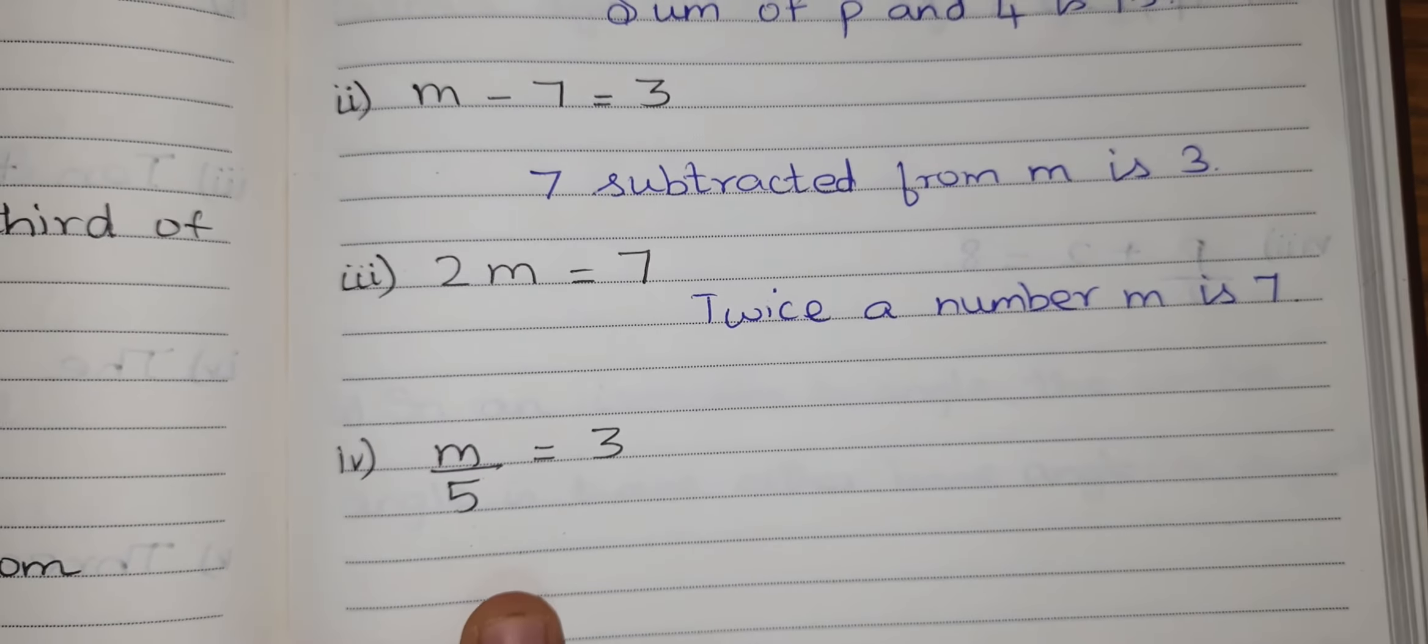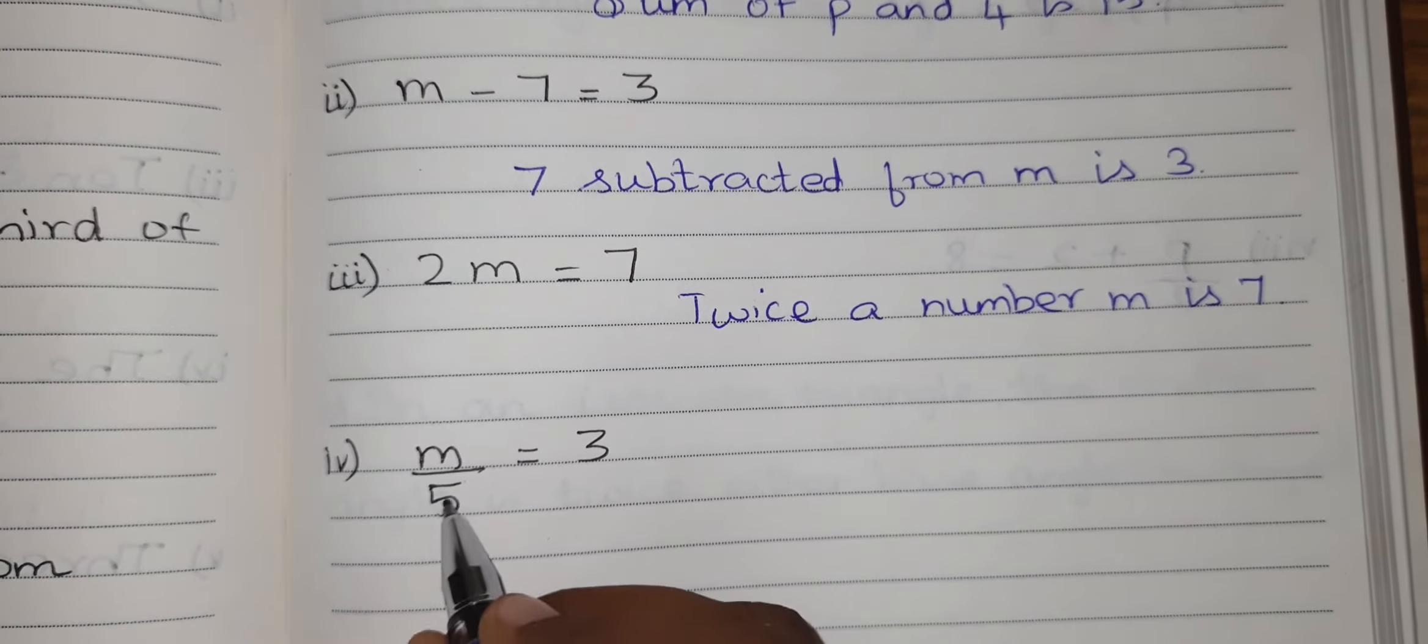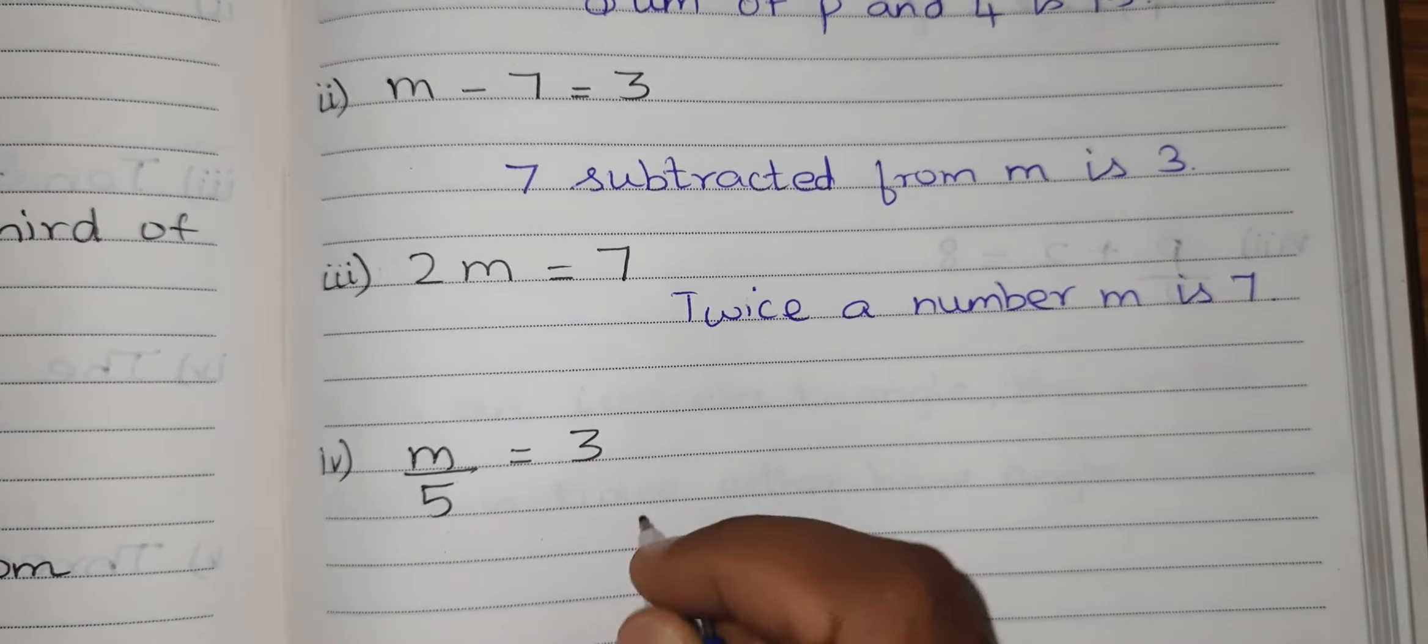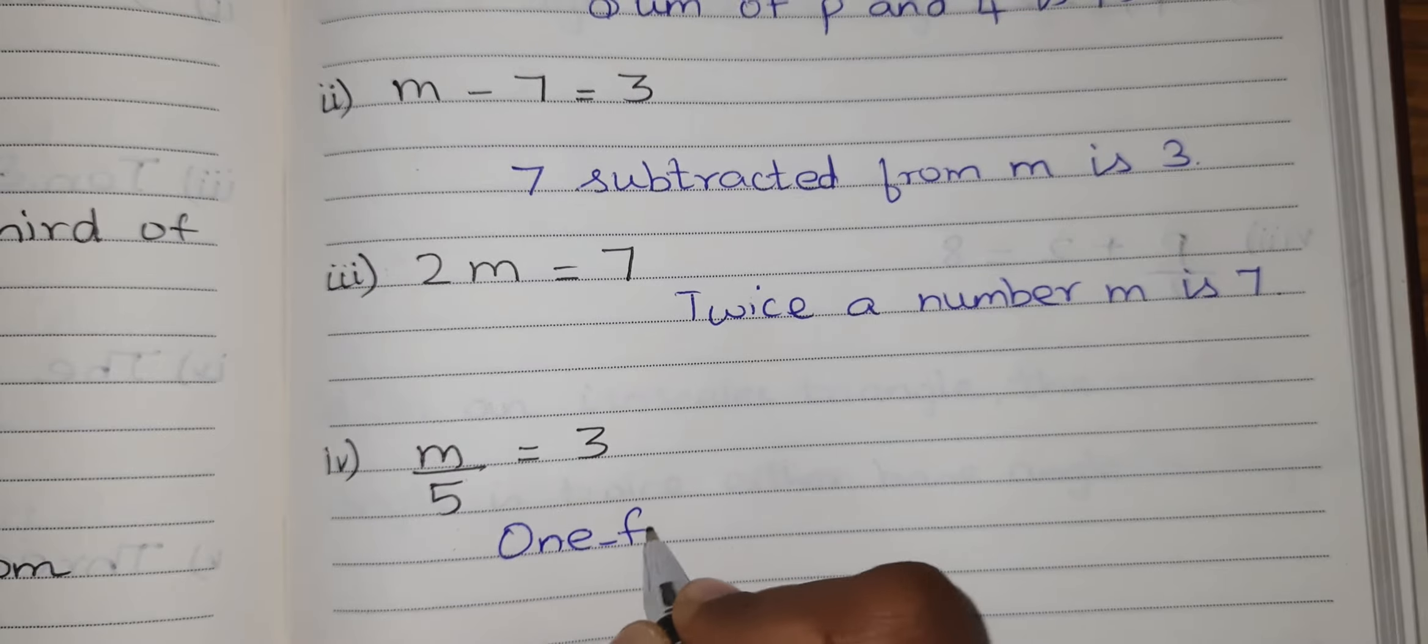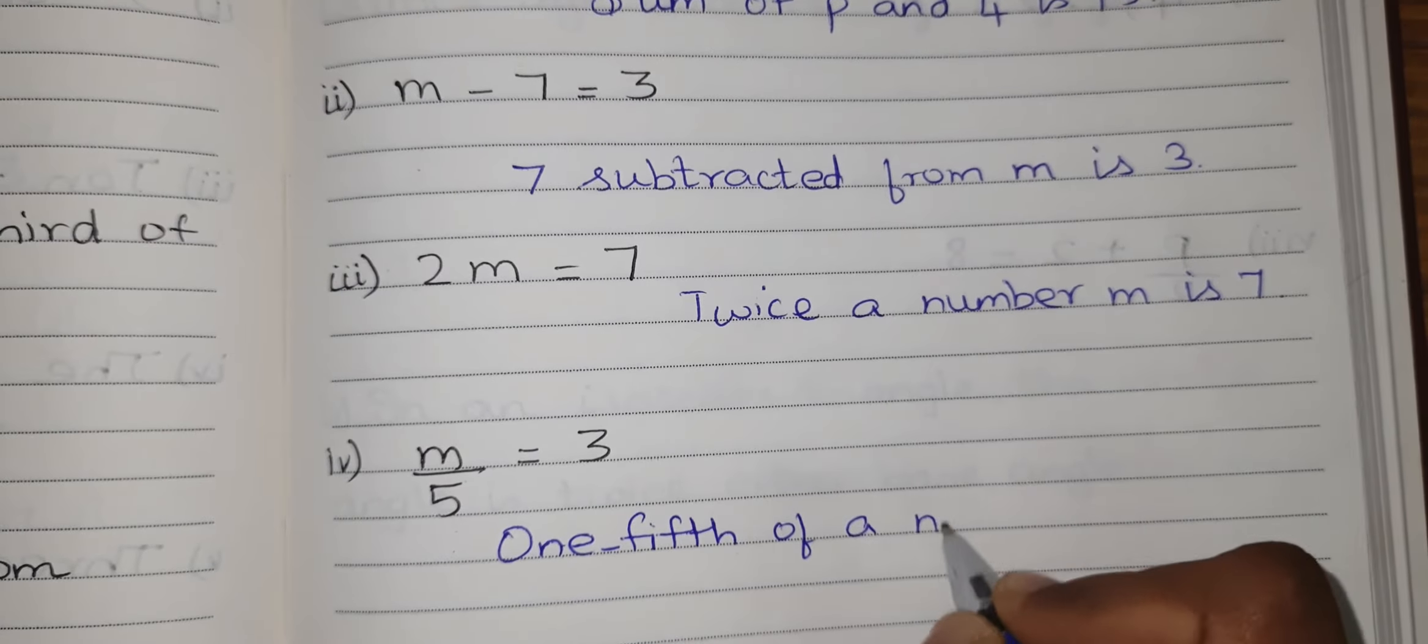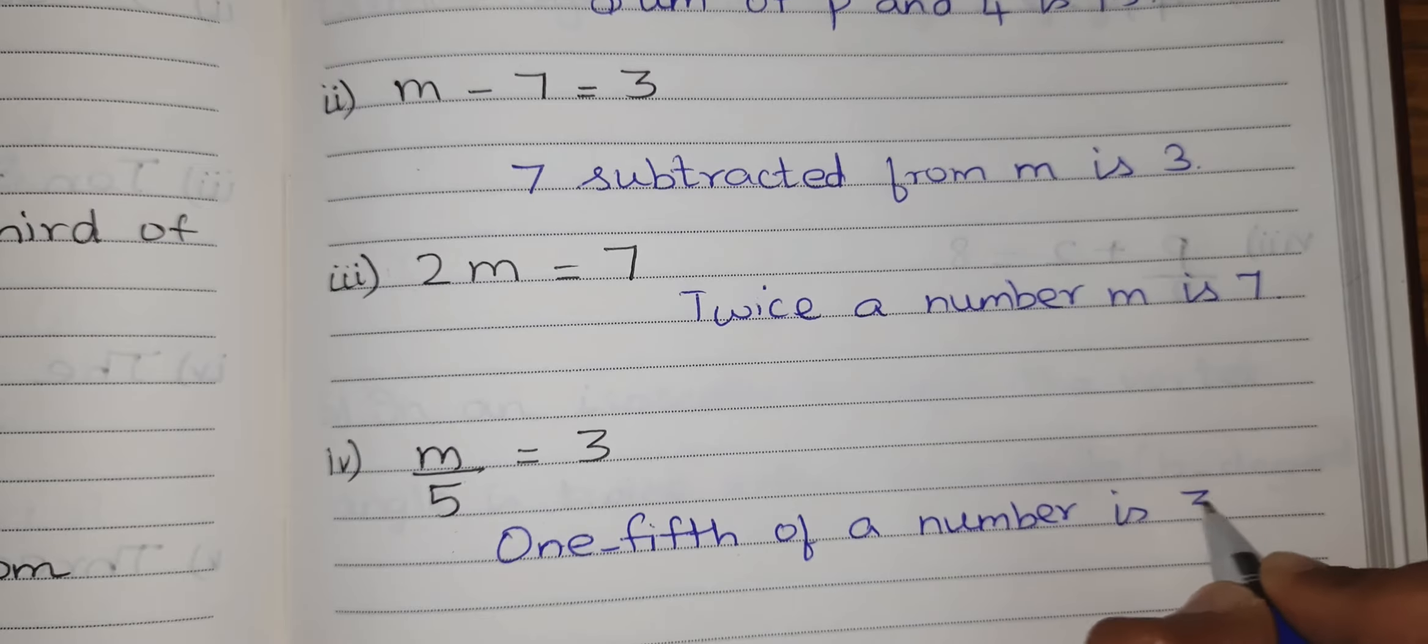m by 5 equal to 3. m by 5 means one-fifth of m. So I have to write: one-fifth of a number is 3.